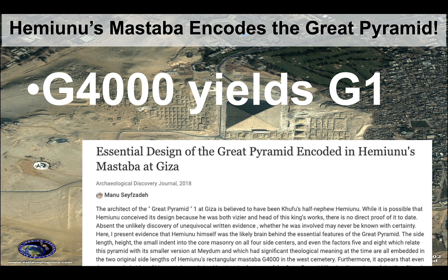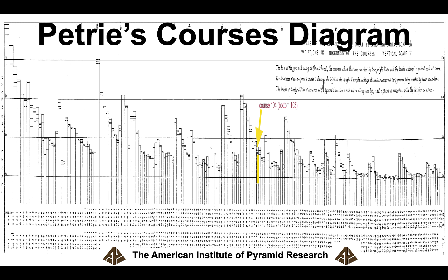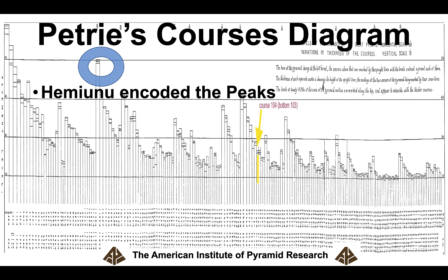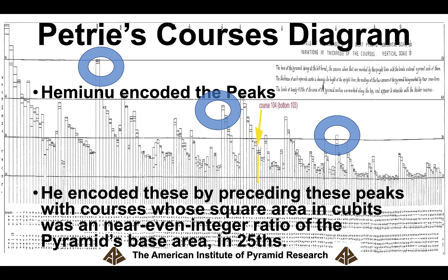Manu Sefzada, the great researcher, has an article about how the essential design of the Great Pyramid is encoded by its architect, Hemiunu. Here's how: this is a diagram by the founder of Egyptology, William Flinders Petrie, who meticulously diagrammed the width and height of all the courses of the Great Pyramid. You can see there's a peak, then the courses go down, then another peak, then down again — that's the pattern followed.